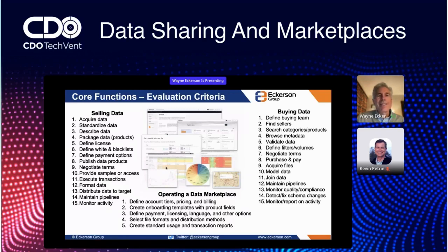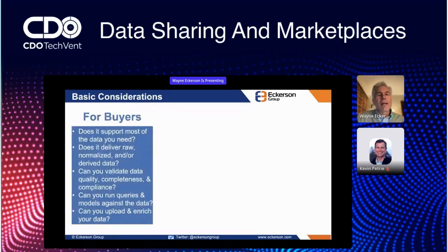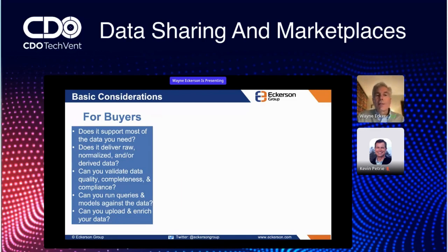I'm not going to go through each of these criteria — I'm just going to share some basic considerations. For buyers, you might want to ask: does this marketplace support most of the data we need — a one-stop shop? Does it deliver raw data, normalized or standardized data, or derived data, or all of that? You probably want all of that, ideally.